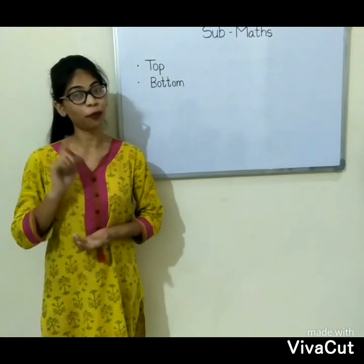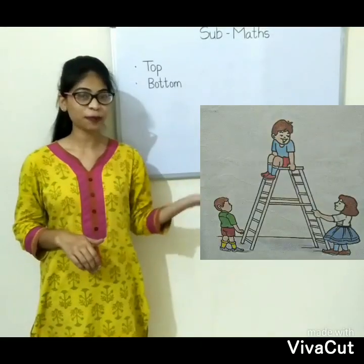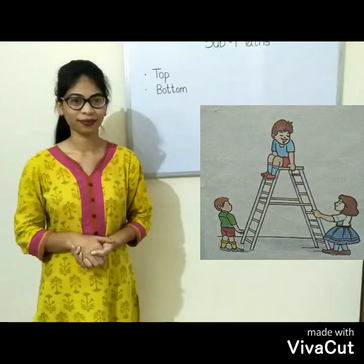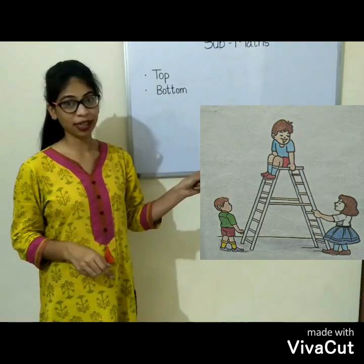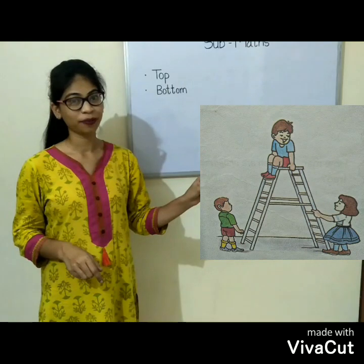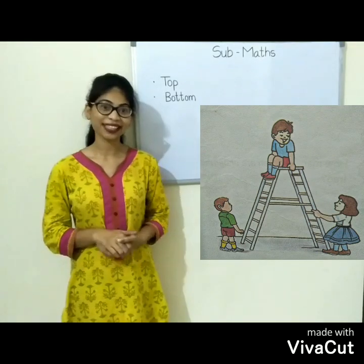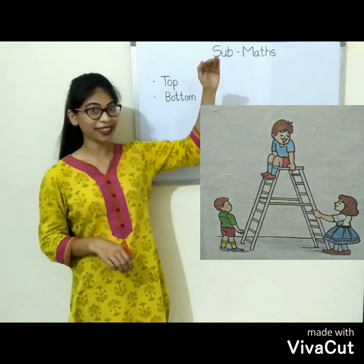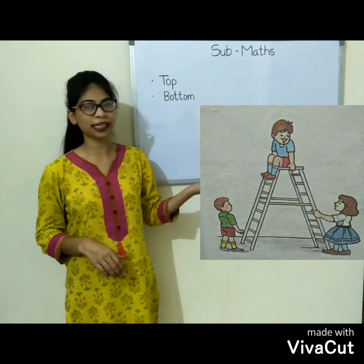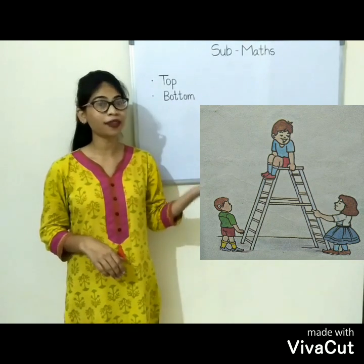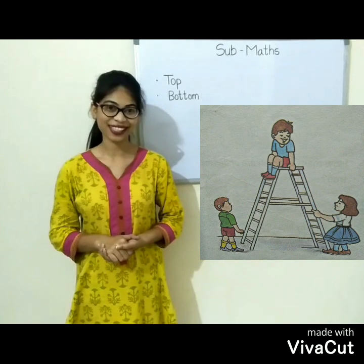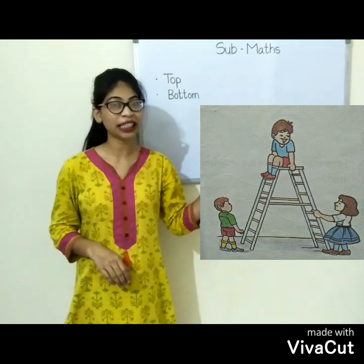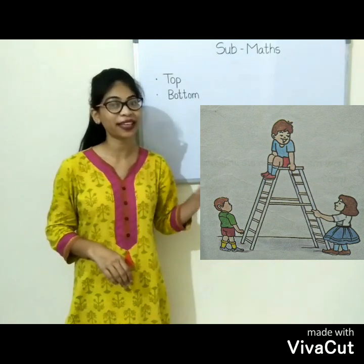Now we shall learn it with one more example. In this picture we can see three children playing on a ladder. Tell me how many children are on the top of the ladder. Yes, the boy wearing a blue t-shirt is sitting on the top of the ladder. How many children are at the bottom of the ladder? Yes, one girl wearing a frock and one boy wearing a green t-shirt are standing at the bottom of the ladder.